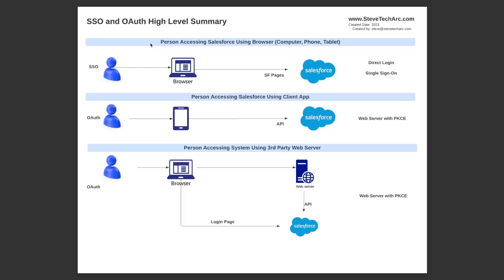In previous videos, I've been giving this summary about single sign-on and OAuth and talking about different times you would use them. We talked about a human user single sign-on into a browser, going into straight direct login or single sign-on. In the next row, we have a human user using a mobile device, not through a browser but a mobile device app, and in that they should be using the web server with PKCE.